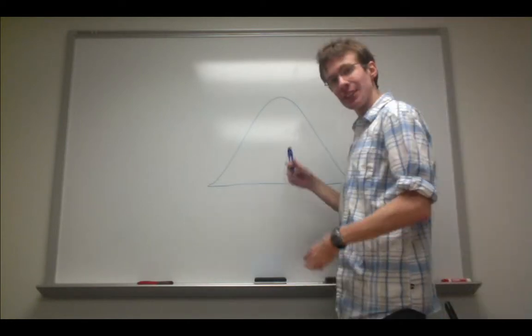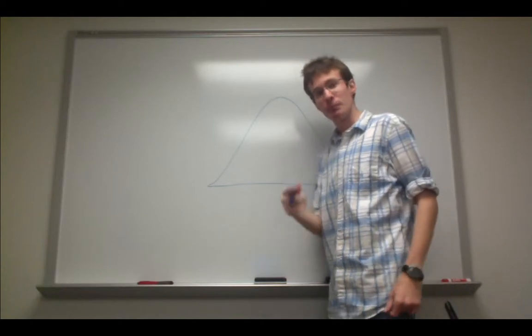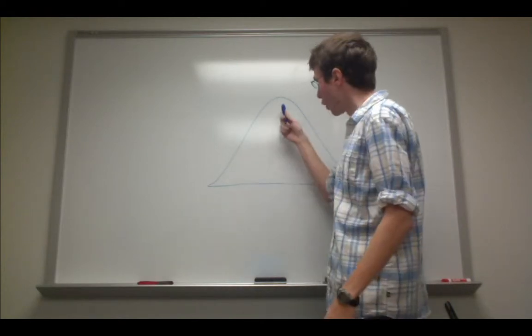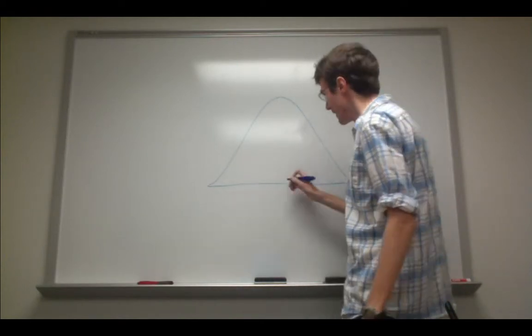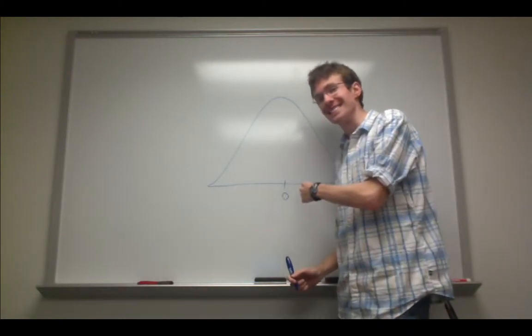In other words, it's unimodal, perfectly symmetric, and all three measures of central tendency, the mean, median, and mode, are all the same. And usually in a z-distribution, all of those measures of central tendency are at zero.